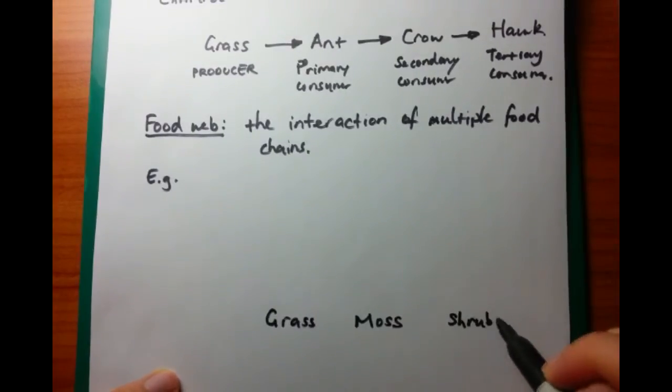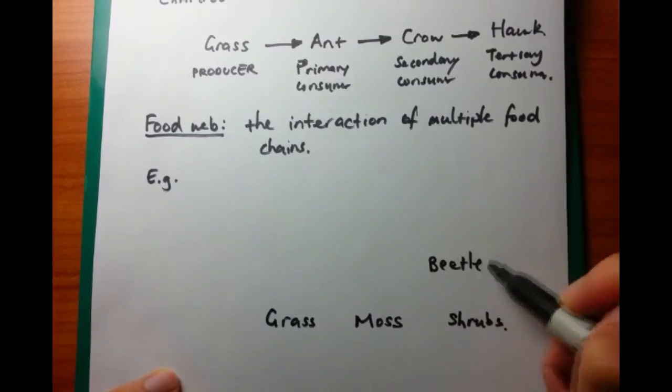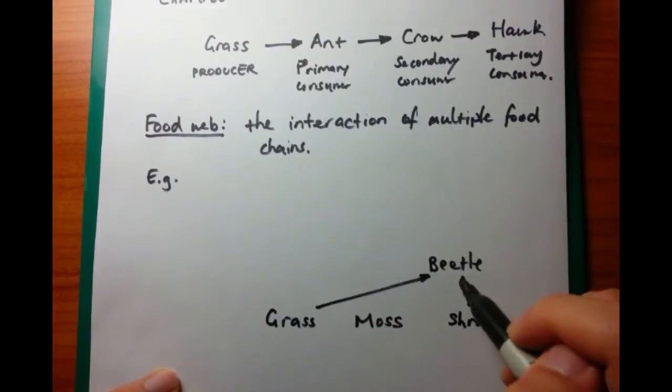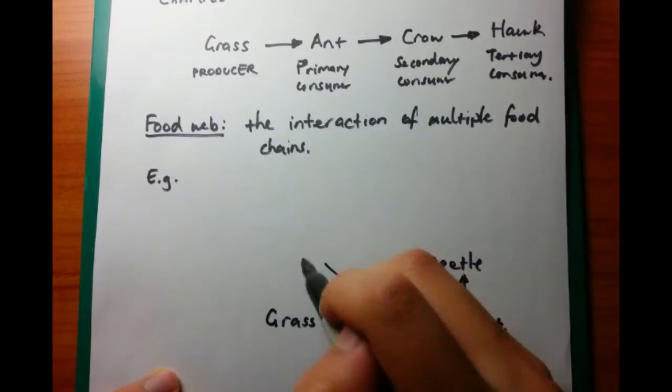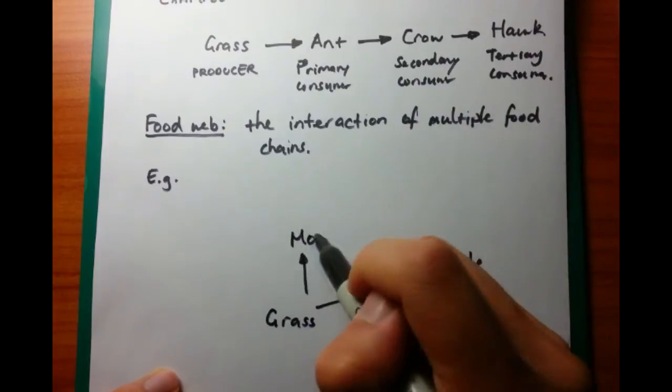Once again, give an example so that they really understand that you understand what the topic is. And for food web, you want to first do your producers at the bottom. In this case, we've got grass, moss, and shrubs. And you want to have multiple different producers. Make sure that you do that.